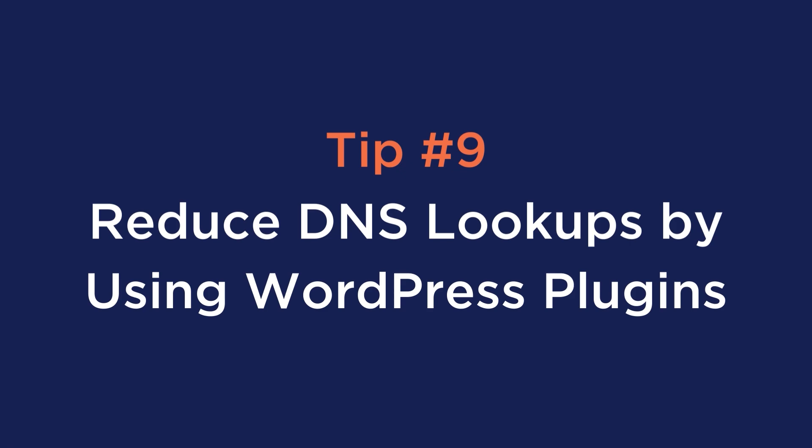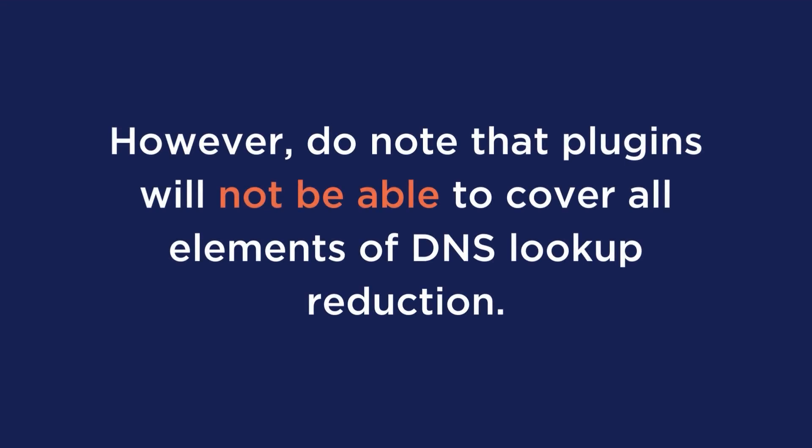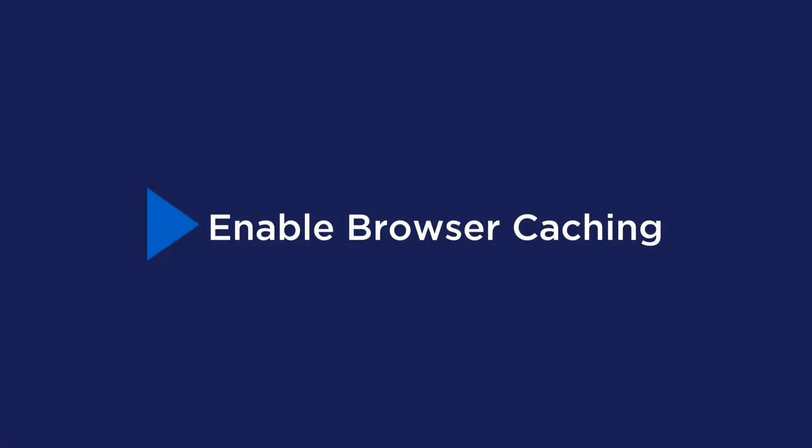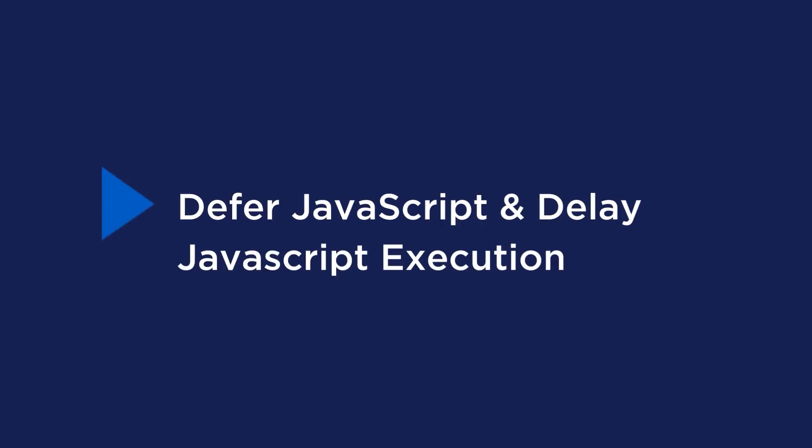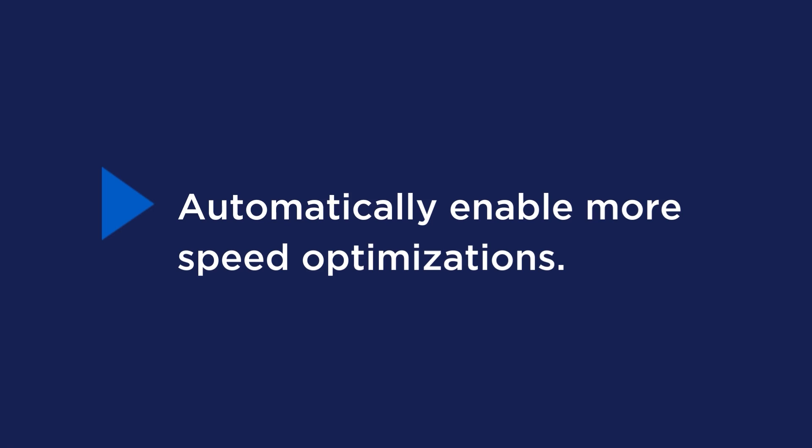Number nine is to reduce DNS lookups by using WordPress plugins. While manual approaches are recommended for more effective reduction, various WordPress plugins are available to help minimize DNS lookups, especially if you're not too familiar with the technicalities. However, note that plugins won't cover all elements of DNS lookup reduction, but they can make some stages quicker and more automated, such as CDN hosting and browser caching. A plugin that can help is WP Rocket. It won't directly reduce DNS lookups in all cases, but it complements the strategies above by speeding up page load times. Features include: remove unused CSS, enable browser caching, use DNS prefetching, defer and delay JavaScript execution, and automatically enable optimizations like optimized Google Fonts.